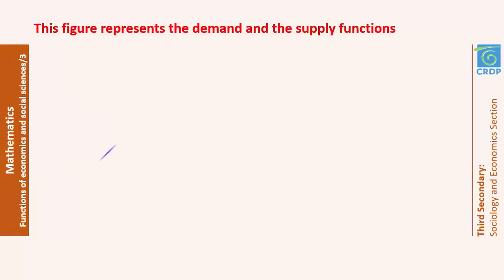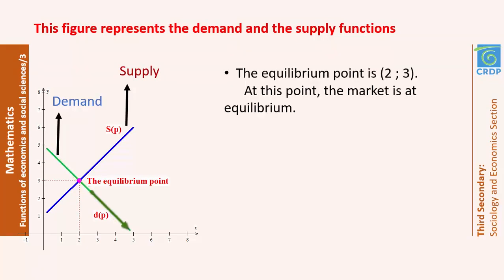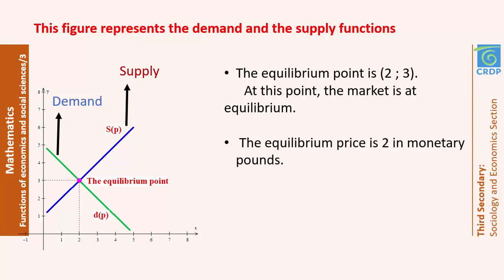Looking at this figure, the green function is the demand function and the blue one is the supply function. Notice that the demand is a decreasing function while the supply is an increasing function as price increases. The two functions intersect at a point, which is the equilibrium point. The coordinates of the equilibrium point are (2, 3), meaning at a price of 2 monetary units, 3 units will be bought. The equilibrium price is 2 and the equilibrium quantity is 3.